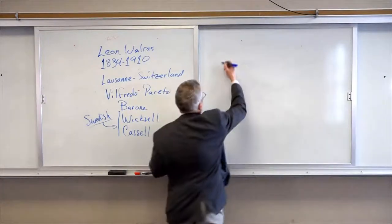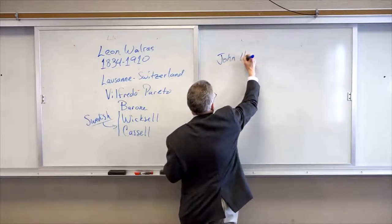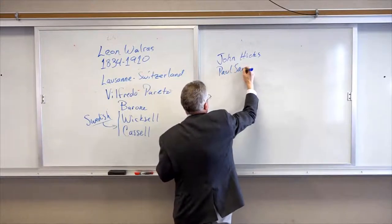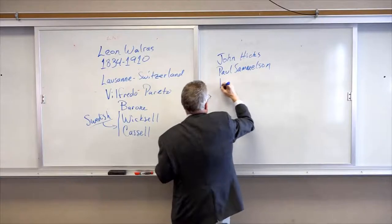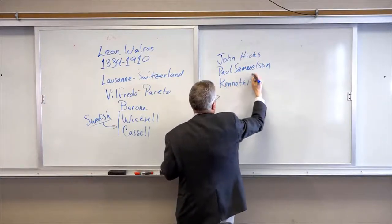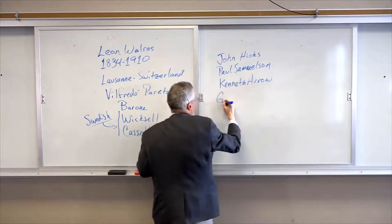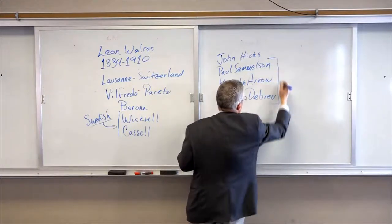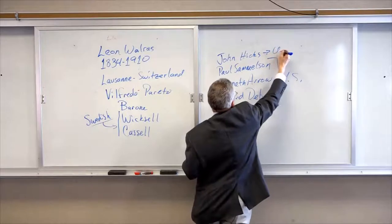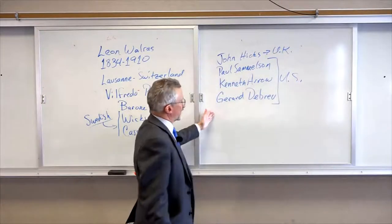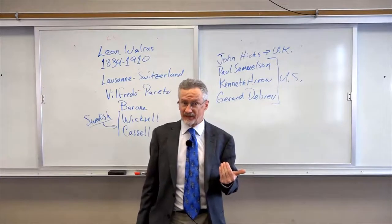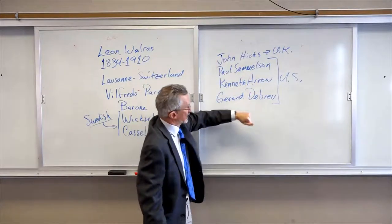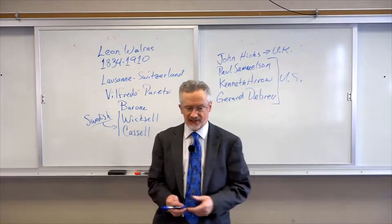Much later we have people such as John R. Hicks, Paul Samuelson, Kenneth Arrow, and Gerard Debreu — these three being Americans, and Hicks from Britain. Every one of them is a Nobel Prize-winning economist. This becomes central stuff to economics; they are all 20th century economists who get their Nobel Prizes in part for their work in general equilibrium theory. This is considered very important for technical economists.